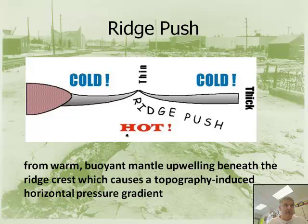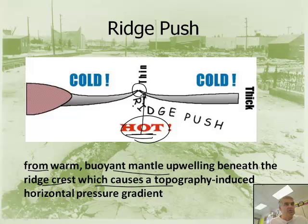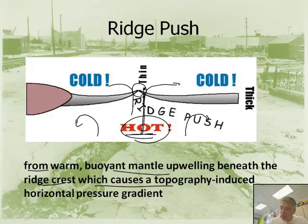We know this region is hot, and that's what they call the ridge push. This comes from warm, buoyant mantle beneath a ridge crest — like the mid-Atlantic ridge — which causes topography-induced horizontal pressure. As the material gets pushed up, it causes the plate to get pushed sideways. They're not saying it's caused by thermal convection currents; they're saying it's simply because this material is hot, so it pushes the plate to the side. That's the ridge push force.